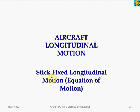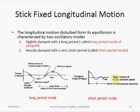Stick-fixed motion essentially means that the control surfaces, and in this case the elevator, is fixed. In other words, the control surfaces are not used to provide any control correction to the motion. So in this case, we disturb the aircraft from its equilibrium flight, and we'll see how the aircraft would correct itself without any control input.